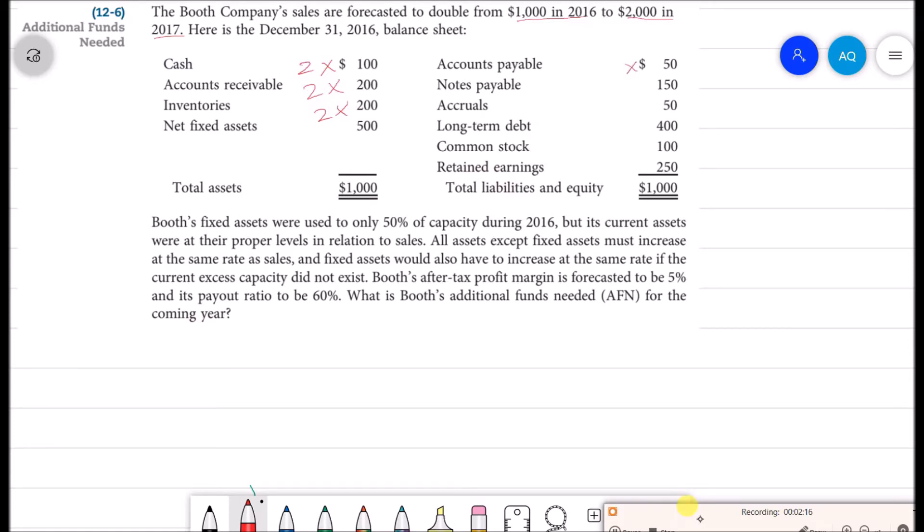We will also need double accounts payable. There is no information about notes payable. These are not spontaneous liabilities, but accruals are spontaneous liabilities, so accruals will also get double. No information about long-term debt and common stock.